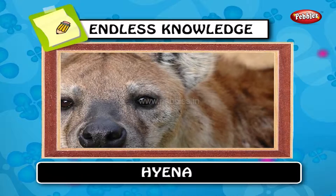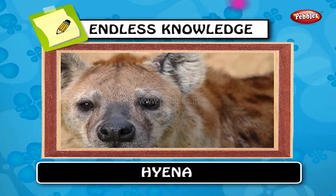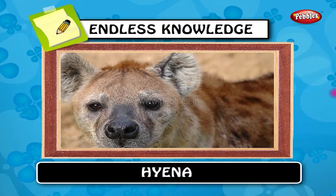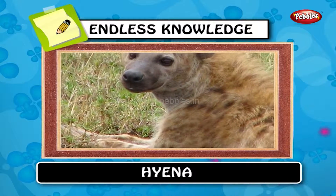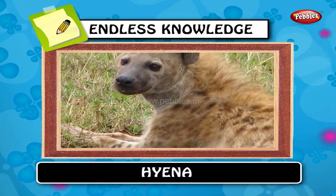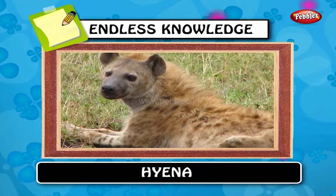Hyena. The hyena is a mammalian family of order carnivore. Hyenas seem to have originated 26 million years ago.